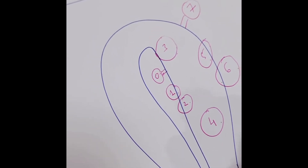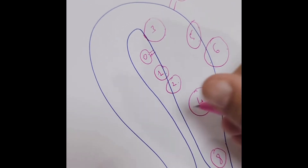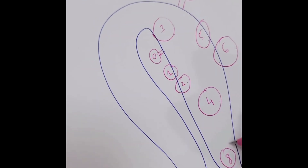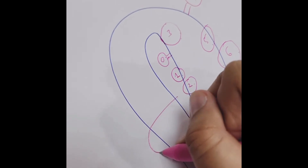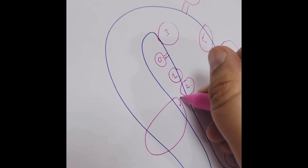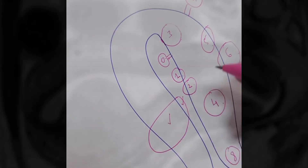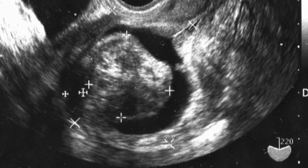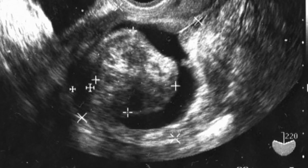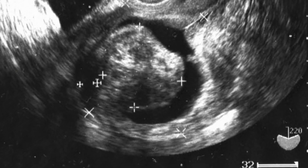These are the classifications of fibroids according to FIGO, based on geographical location and relation to the serosa and mucosa. Sometimes we encounter a myoma bulging from the serosa and the mucosa — that is type two to type five. This imaging shows MRI and ultrasound of a type zero or type one submucous fibroid.